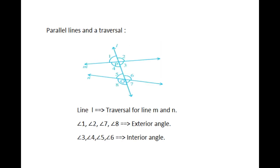Parallel lines and a transversal: the line which intersects two or more lines at distinct points is called a transversal. See the figure. Line L intersects lines M and N at points P and Q respectively. Therefore, line L is the transversal for M and N. Observe that four angles are formed at each of the points P and Q. Angles 1, 2, 7, and 8 are called the exterior angles, while angles 3, 4, 5, and 6 are called the interior angles.